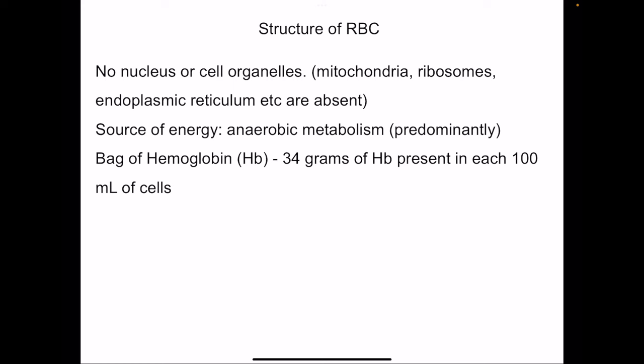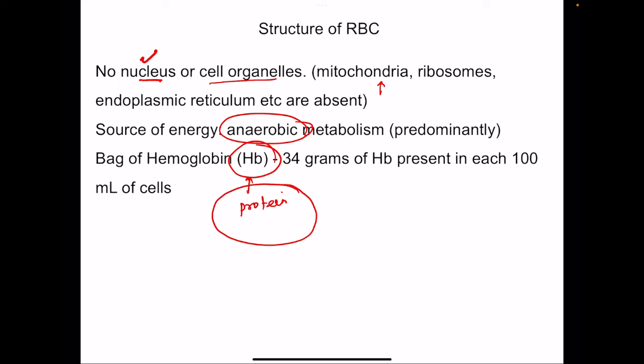RBCs do not have any nucleus or cell organelles — no mitochondria, no ribosome, no endoplasmic reticulum. Since mitochondria are absent, the source of energy for RBCs is mainly anaerobic metabolism. The reason for absence of organelles is that RBC is basically a bag of hemoglobin — if filled with organelles there would be very less space for hemoglobin. By getting rid of all organelles, the RBC is most efficient in carrying hemoglobin.